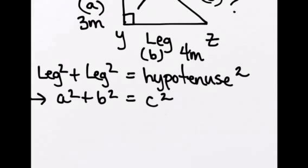So if one leg is three, we would instead say three squared, we'd substitute in the three for that A value, plus four squared, because we're substituting in the four meters for that other leg, equals C squared.